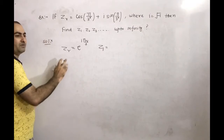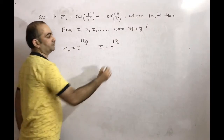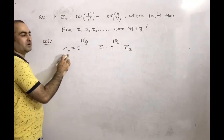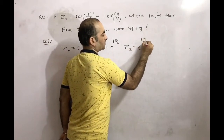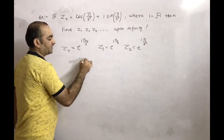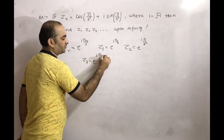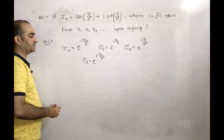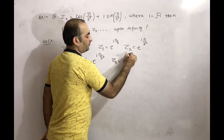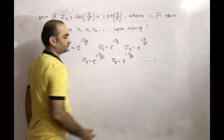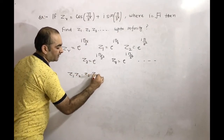For z₁, r equals 1, so z₁ = e^(iπ/3). For z₂, r equals 2, so z₂ = e^(i·(π/3)²). For z₃, r equals 3, so z₃ = e^(i·(π/3)³). For z₄, r equals 4, so z₄ = e^(i·(π/3)⁴), and so on. Now we want z₁·z₂·z₃·z₄ and so on till infinity.